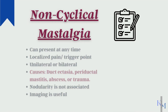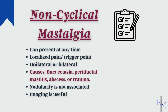Non-cyclical Mastalgia is not associated with menstruation and can present at any time. It is a well-localized pain, and a trigger point is described for it. It can be unilateral or bilateral, mostly subareolar or in the upper outer quadrant. There can be a number of different causes, like an abscess, duct ectasia, periductal mastitis, trauma, or even cancer — though the incidence of cancer is low. Nodularity may not be associated with it.